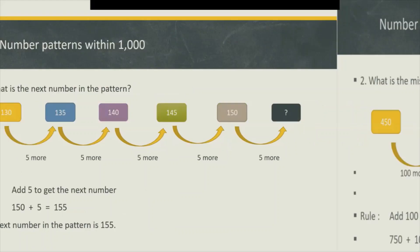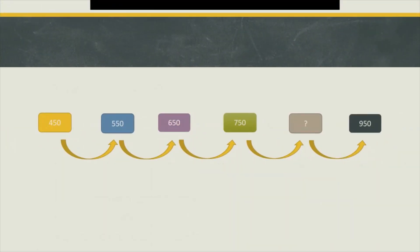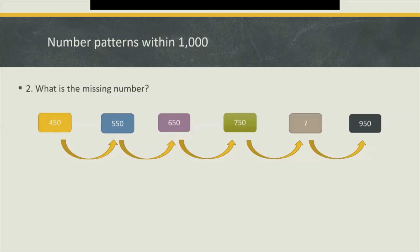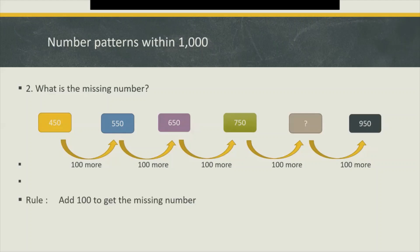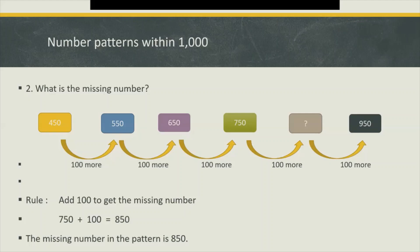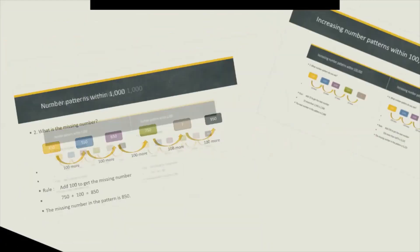Second example — look at these numbers. What is the missing number? One hundred more, isn't it? That's correct. So we add 100 to get the missing number. It's going to be 750 plus 100, which gives us 850. So the missing number in the pattern is 850.